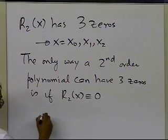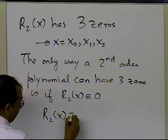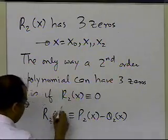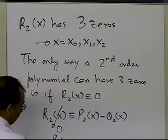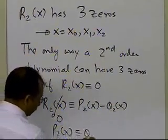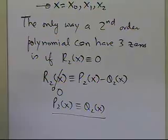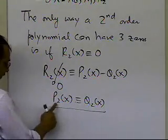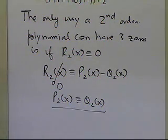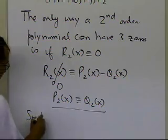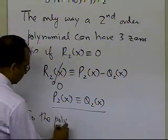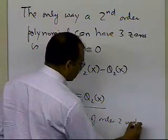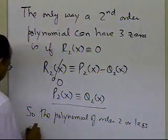If r2(x) is identically equal to zero, and I had r2(x) identically equal to p2(x) minus q2(x), and if this is equal to zero everywhere, then p2(x) is identically equal to q2(x). So what I've shown is that the second-order polynomial is unique, because if I choose some other polynomial, it turns out to be the same polynomial — the one which goes through those three data points. The polynomial of order 2 or less is unique.